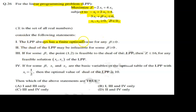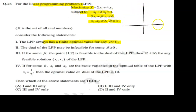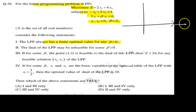Statement 1 says: the LPP always has a finite optimal solution for beta greater than or equal to 0. If we have beta greater than 0, we can plot the first inequality. When we plot it, on the x1-axis, if we simplify, we get a point on the axis.